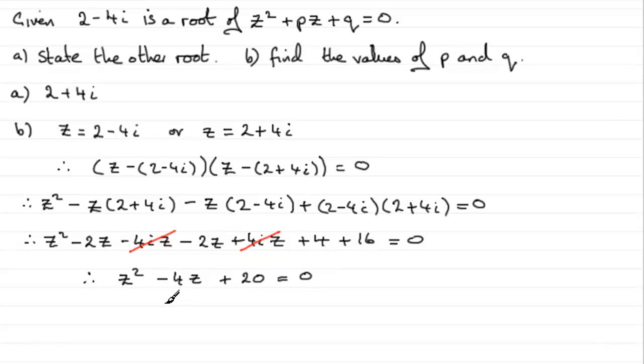And if I compare that now with what we were given, compare with z squared plus pz plus q equals 0, you can see now that the coefficient of z was minus 4, and it's here, it's p. So therefore, p must have equaled minus 4. And if you compare the constants on the end, you can see that q has to be that 20. Okay, so another way that you could do that question.